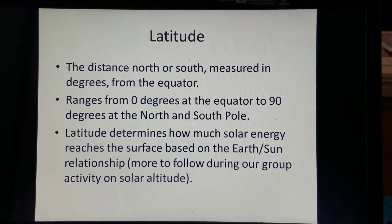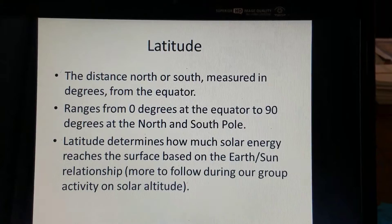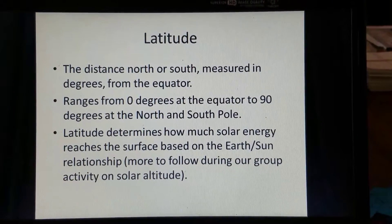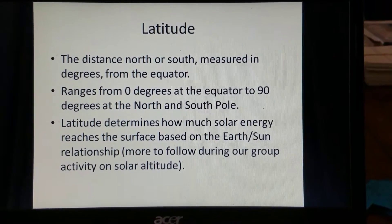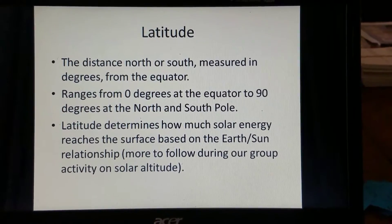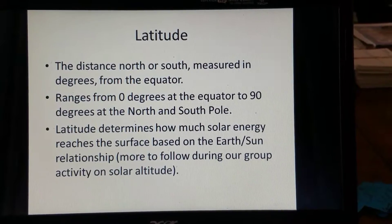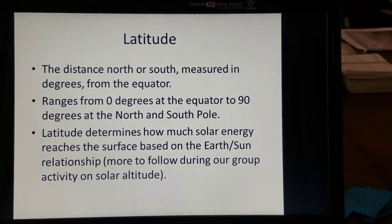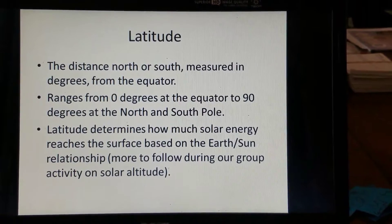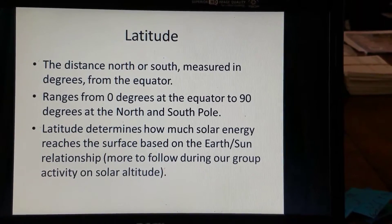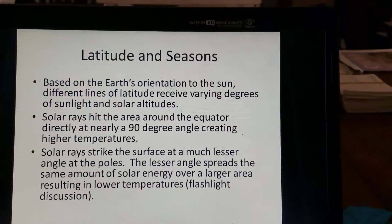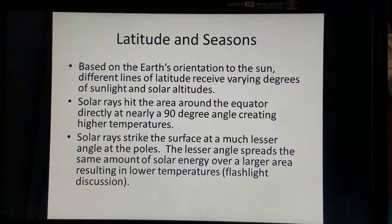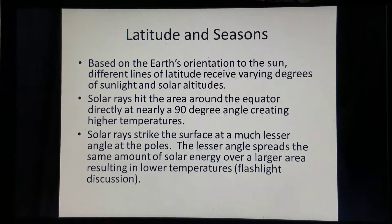Let's start off with latitude. When we talk about latitude, what we're talking about is the distance north or south, measured in degrees from the equator. The latitude generally ranges from zero degrees at the equator itself all the way to 90 degrees north or south latitude at the top of the pole — the North Pole — or at the bottom, the South Pole. Latitude really is important in determining Earth's climate; it determines how much solar energy reaches the Earth's surface, and it's based on the Earth-Sun relationship. Basically, latitude determines how much incoming solar radiation a certain spot on Earth gets.